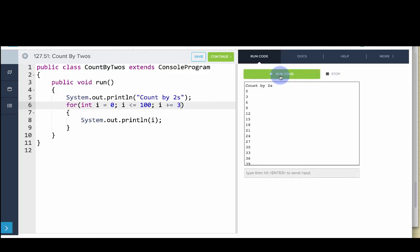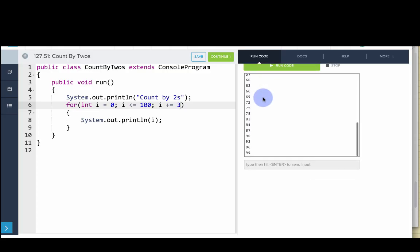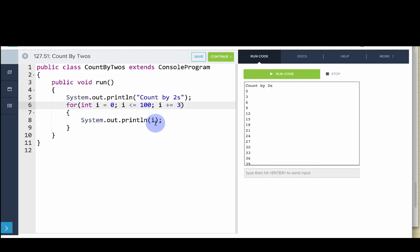What that does is has us end up counting by threes. And so there you go, we can see we're putting out i every time in the for loop. So that's the more general purpose version of a for loop.